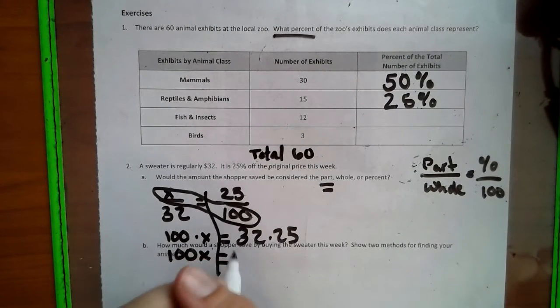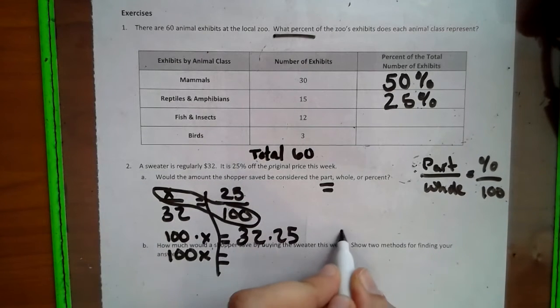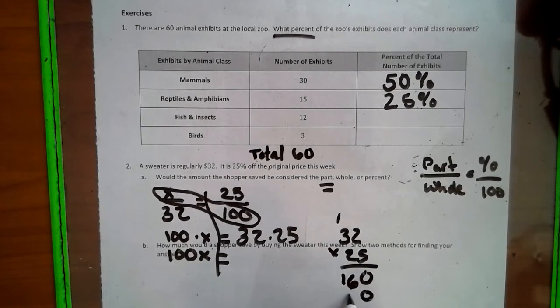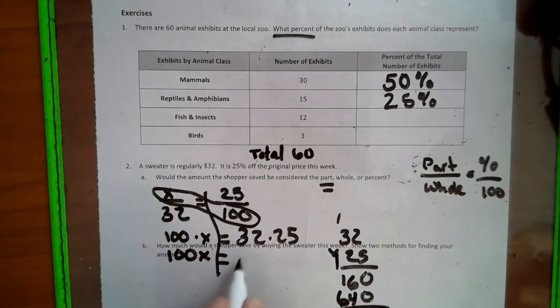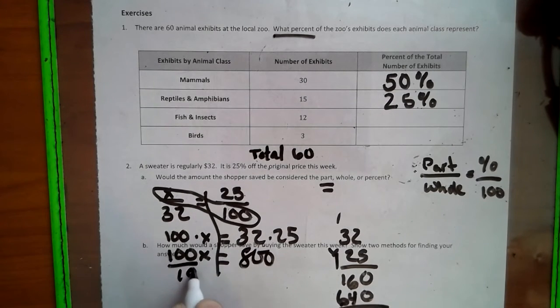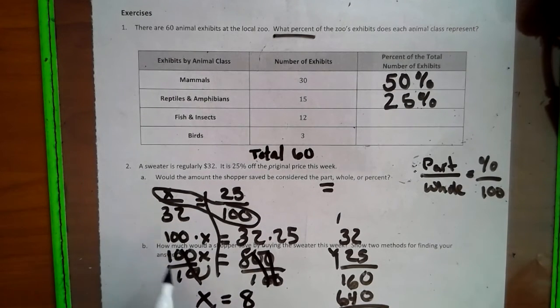But we can take this in a few different ways. We take it to the side of our paper. We can just do 32 times 25. 800, divide by 100, divide by 100. So x equals 8. So you're saving $8.